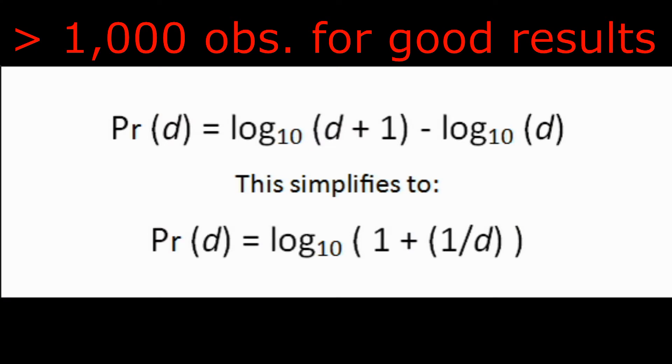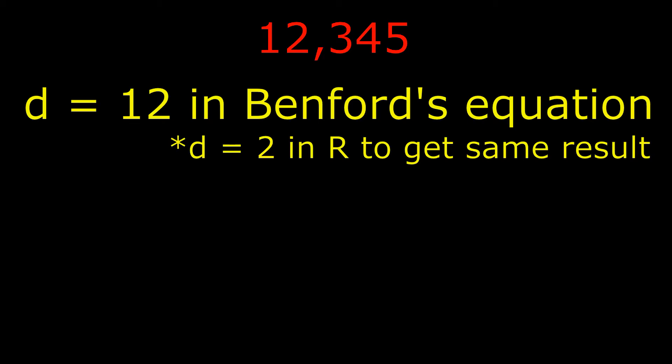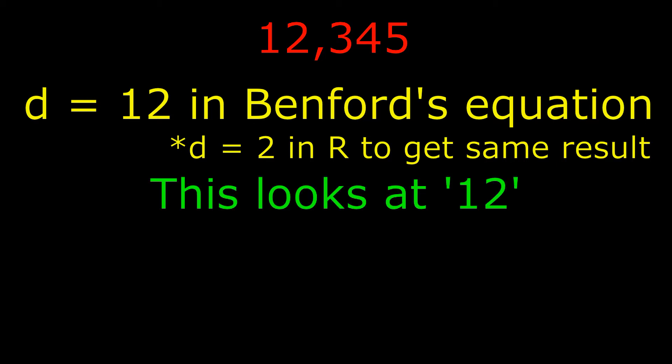A rule of thumb when working with Benford's Law is that you should have more than 1,000 observations in your data set. Benford's Law looks at the frequency distribution of the digits in your data. The notation d represents the number of digits the algorithm should examine. For example, using the number 12,345 — if we plug in d=2, Benford's Law will look at the first two digits from the left, which is 12.